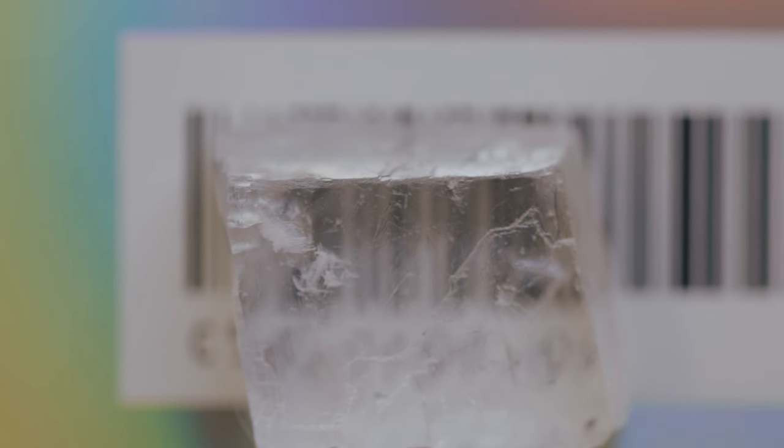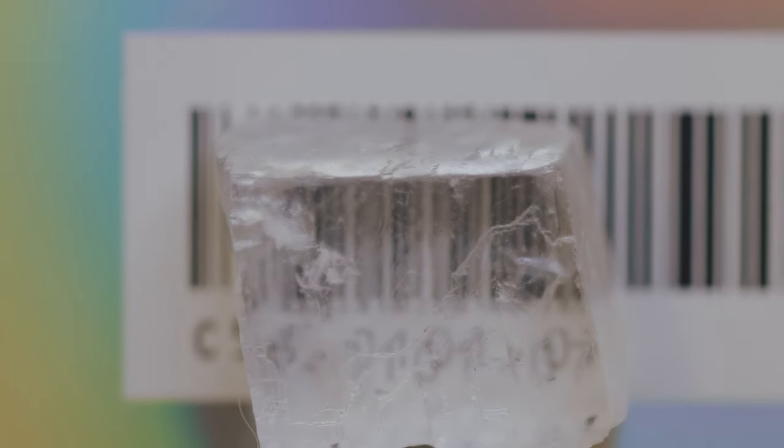A double image of whatever's behind it. Looking at this text through my small piece of Iceland spar, we can easily see the double image. We call this birefringence, which is the effect of splitting light into separate polarized paths, creating two images with different polarizations.